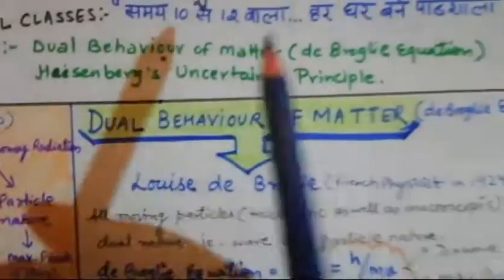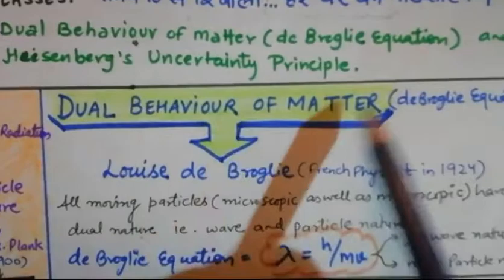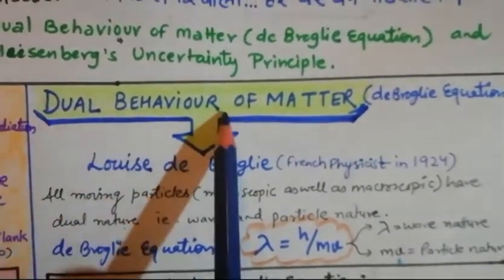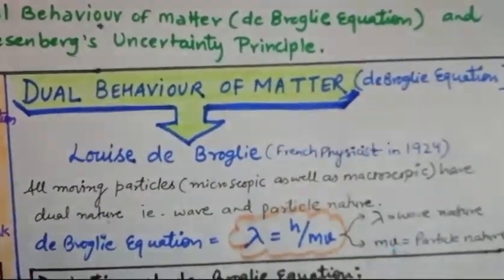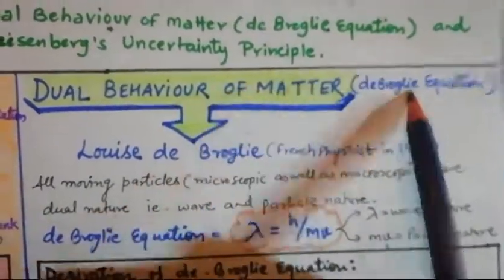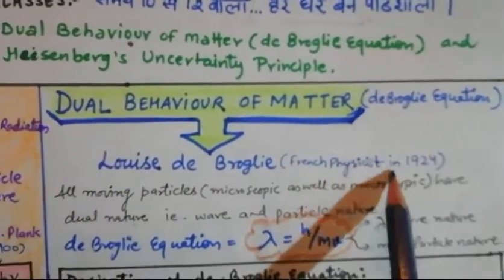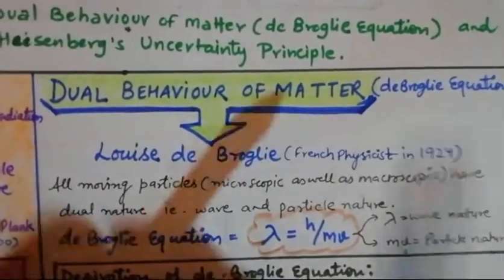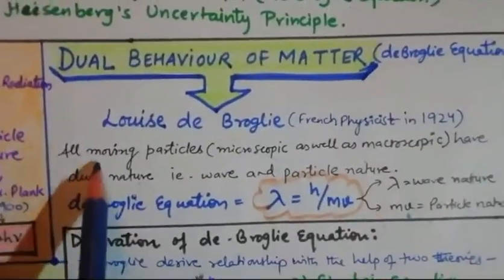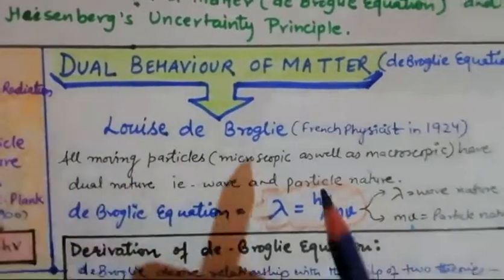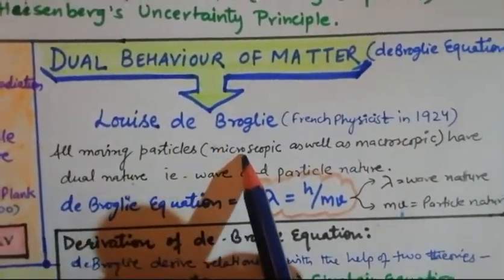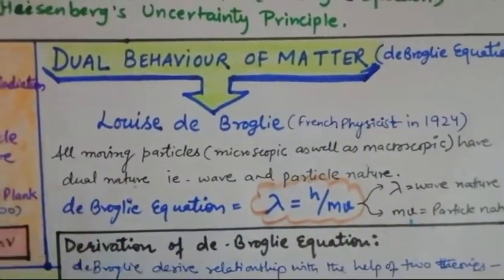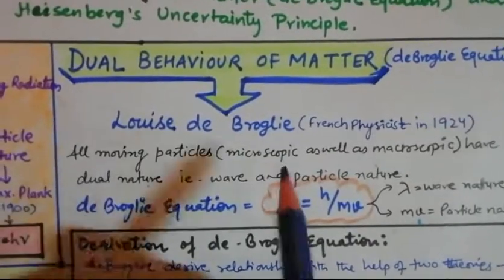This is basically known as the de Broglie equation. Whether the exam asks you to explain dual behavior of matter or describe the de Broglie equation, it is the same concept. In 1924, a French physicist Louis de Broglie stated that all moving particles — including electrons — whether microscopic or macroscopic, have dual nature: one is wave nature and the second is particle nature.